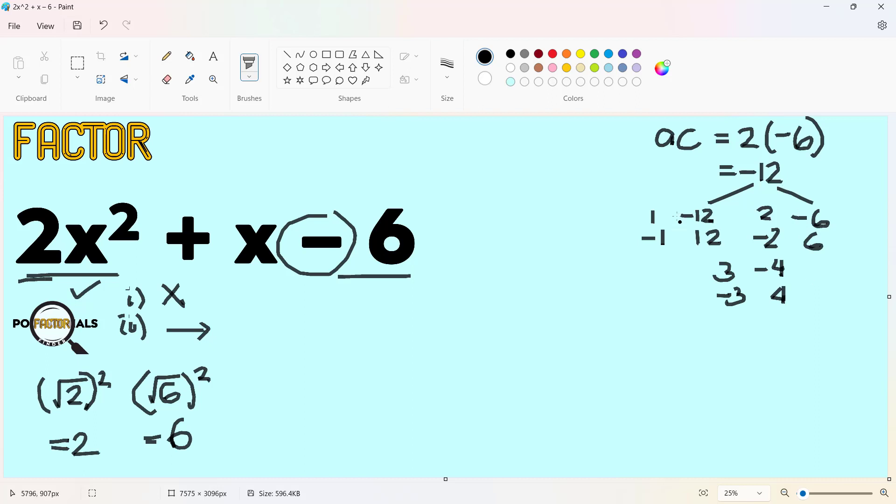Now, these are the 6 pairs of coefficients when multiplied by their corresponding partner will result to negative 12. The AC way allows us to look for the sum of any of this. Add all of this, and if there is a pair that will result to our B coefficient of 1. The coefficient now, when added, will result to positive 1, is this pair. We have negative 3 and 4. Negative 3 plus 4, that's positive 1. Negative 3 times 4, negative 12. We will be using these coefficients as we move further to this process.